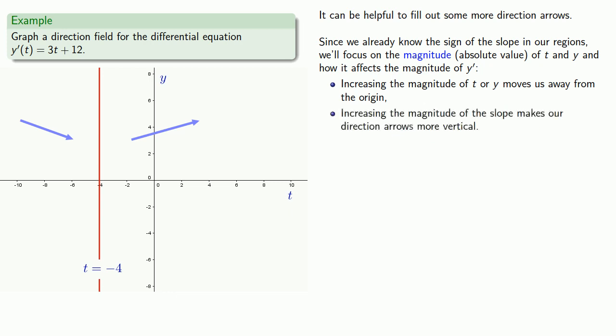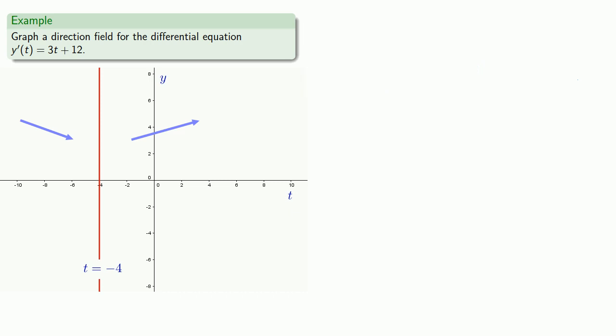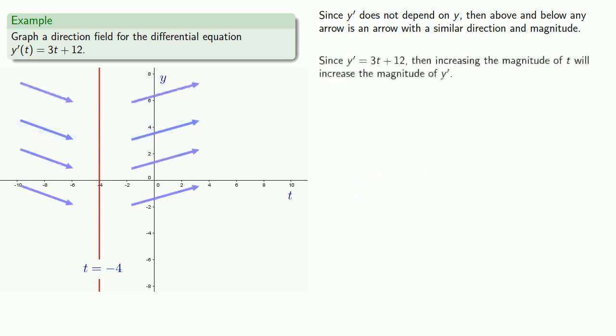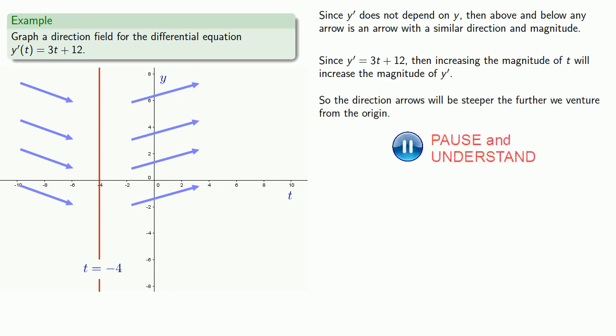On the other hand, increasing the magnitude of y prime, that's the slope, makes our direction arrows more vertical. So the first thing to notice here is that y prime does not actually depend on y. And what this means is that above and below any direction arrow is another arrow with a similar direction and magnitude. So we'll copy this one direction arrow that we graphed above and below. On the other hand, since y prime equals 3t plus 12, then increasing the magnitude of t will increase the magnitude of y prime. And so the direction arrows will be steeper the further we venture from the origin. So to the right we'll draw some steeper direction arrows.